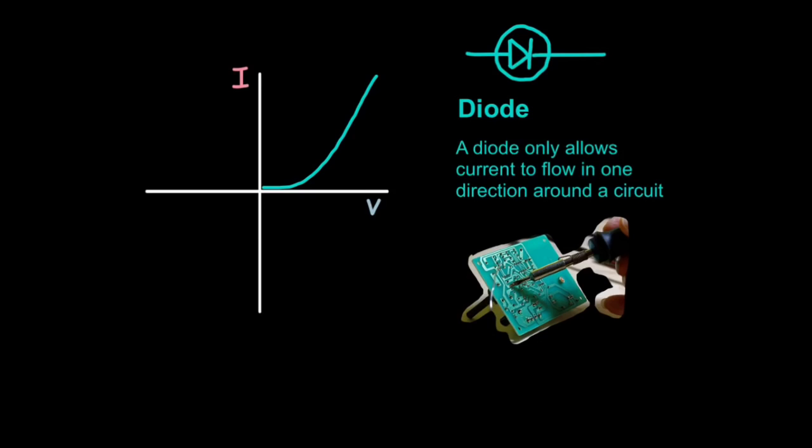Diodes are useful in circuit boards to ensure that current flows in one direction only, preventing damage to the circuit board. So the point here is a diode only allows current to flow in one direction around the circuit, so you will recognize the diode graph instantly because the line will only be in either the positive or the negative, but never both.